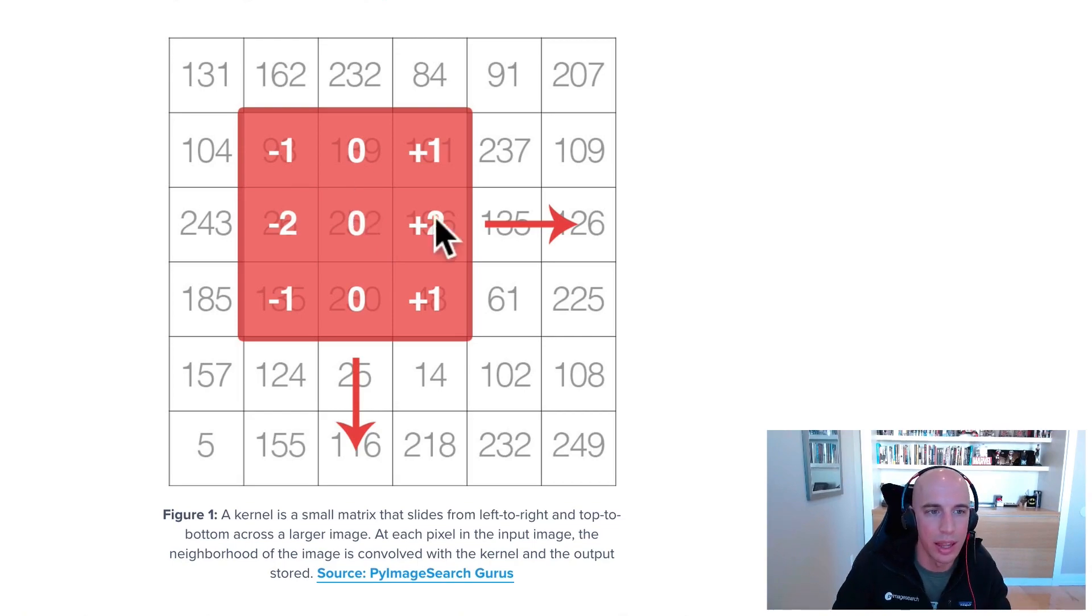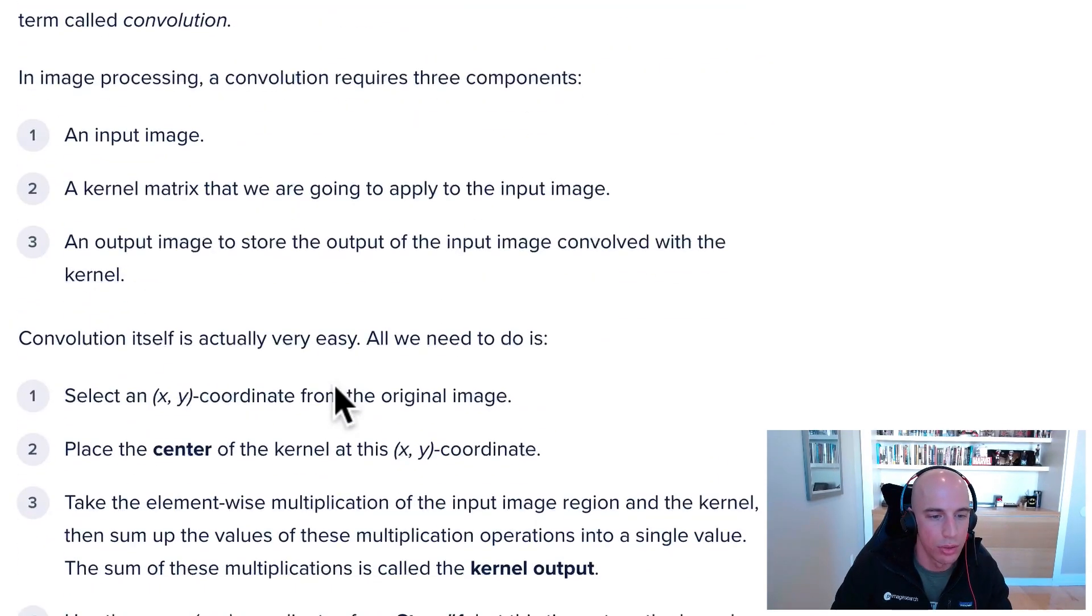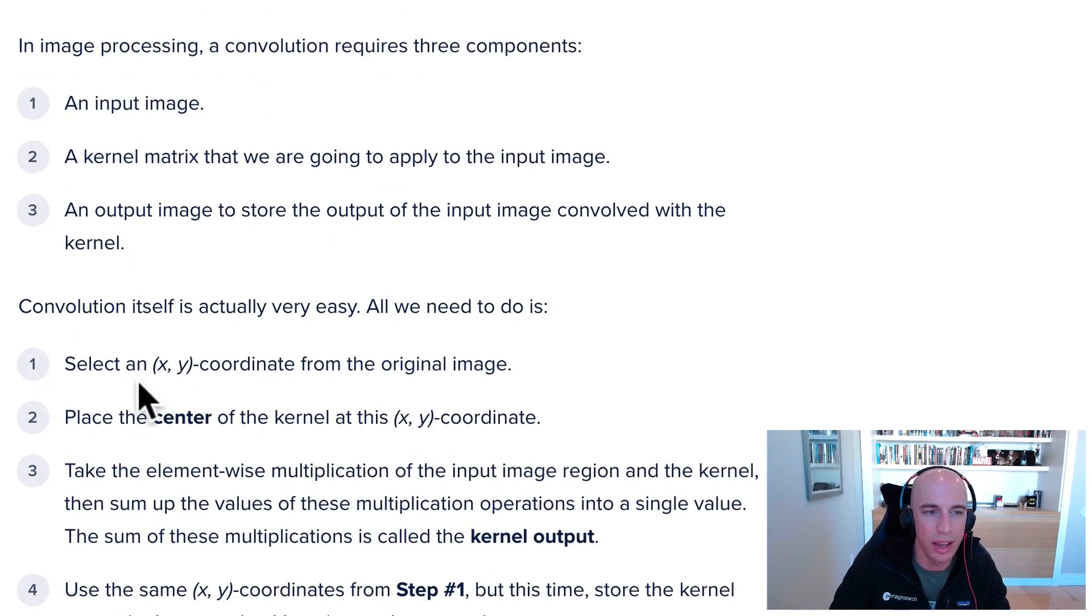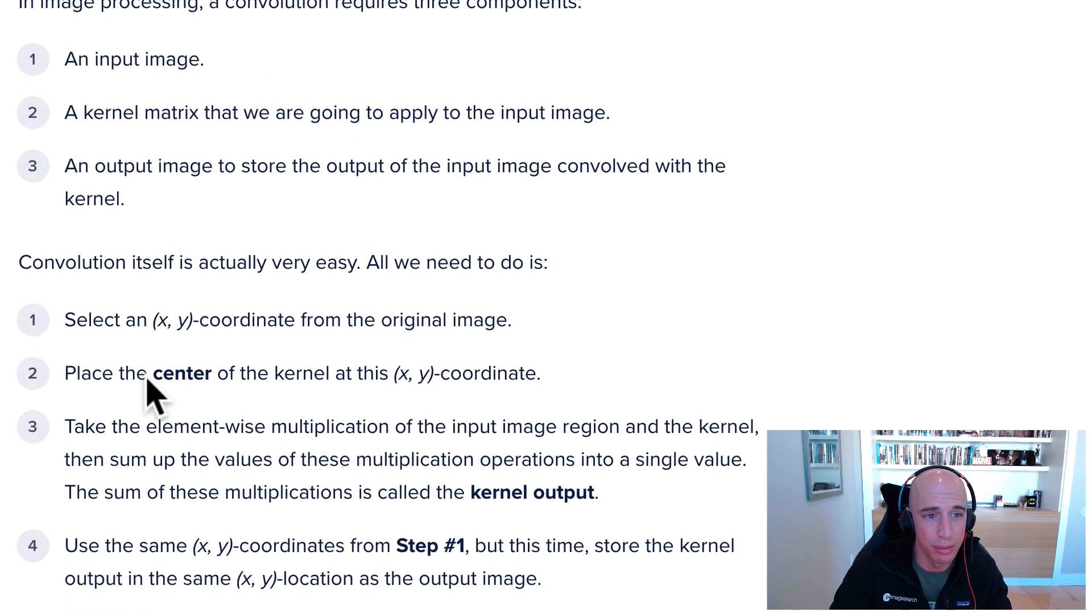Let's look at a worked example. There are three components that we need: an input image, this kernel matrix—the tiny matrix that we're going to apply on top of the larger image—and this output array that's going to store the output of the image convolved with the kernel.